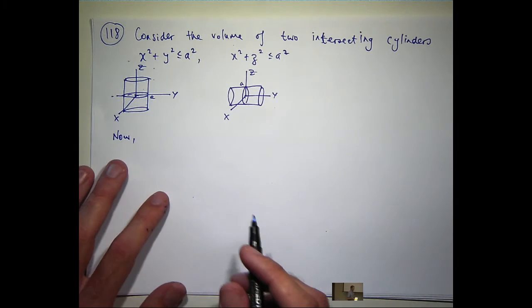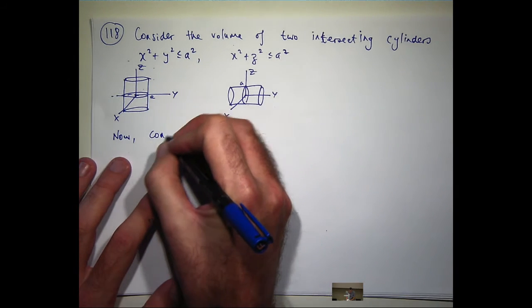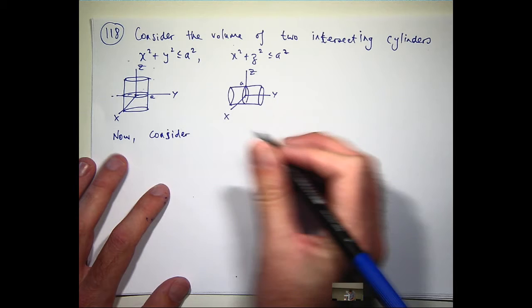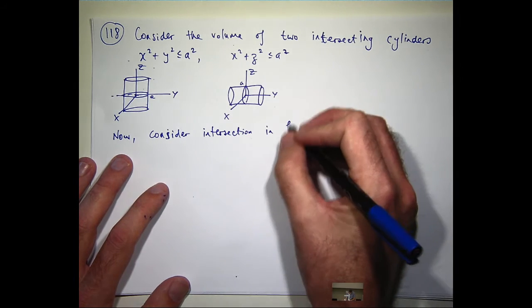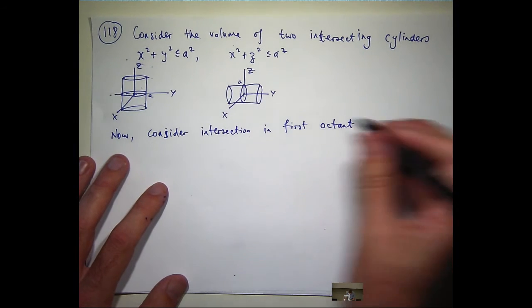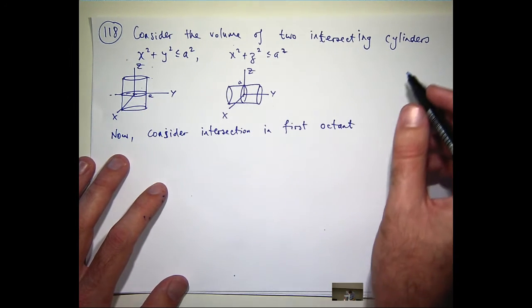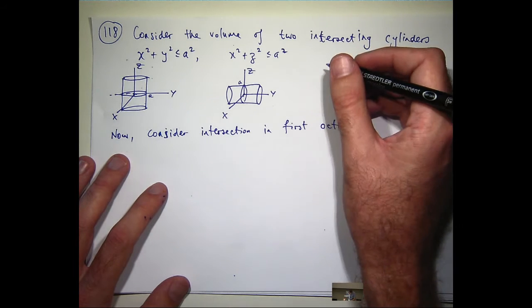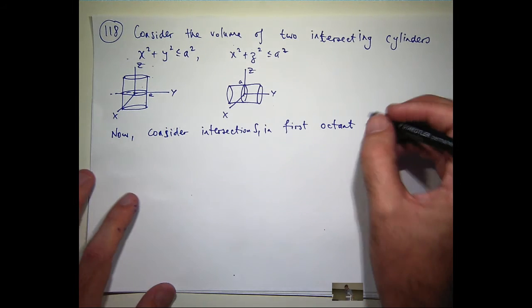Let's see if we can clarify our ideas here. So I'm only going to consider the intersection in the first octant. In other words, where x, y, and z are all non-negative. And then I'm going to multiply my answer by 8. Let's call this S1.